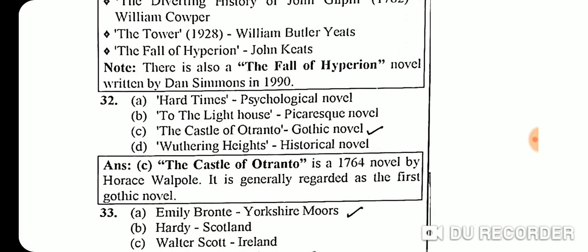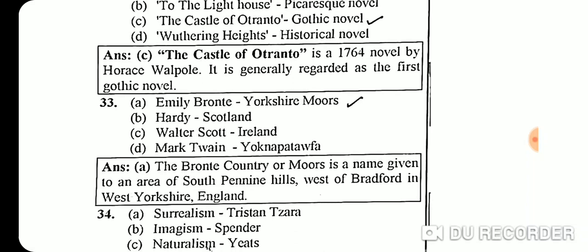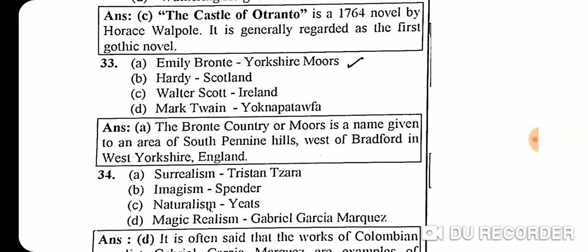Question 32: The Castle of Otranto is a Gothic novel written by Horace Walpole in 1764. Question 33 correct option relates to Emily Brontë and Yorkshire Moor — Brontë Country or the Moore is the name given to an area of the south Pennine hills, west of Bradford in West Yorkshire, England.